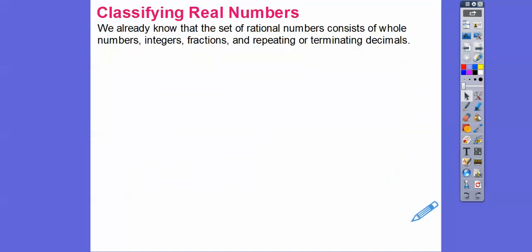We already know that the set of rational numbers consists of whole numbers, integers, fractions, and decimals. But they have to be repeating or terminating decimals.